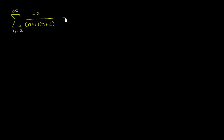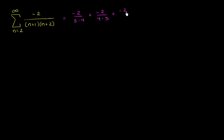If we wanted to see what this looks like, it starts at n equals 2. When n equals 2, this is negative 2 over 3 times 4. Then when n is equal to 3, this is negative 2 over 4 times 5. And negative 2 over 5 times 6, and it just keeps going on and on.